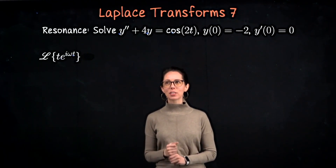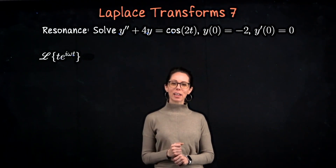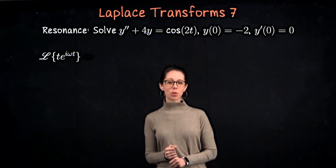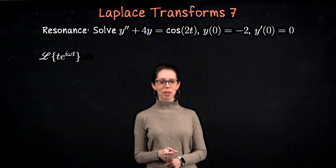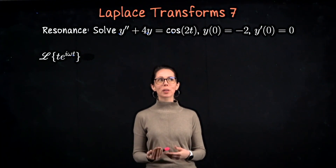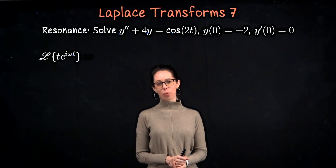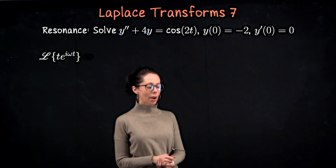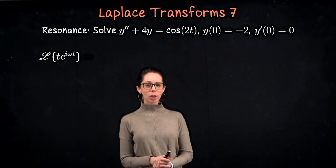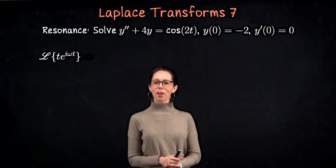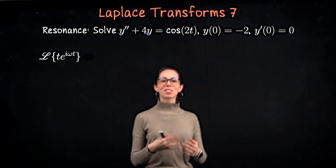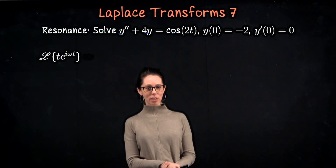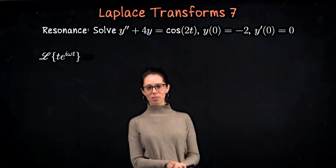If you take the left-hand side y double prime plus four y and write down its associated characteristic or auxiliary equation r squared plus four, and solve for r values that make it zero, you would get that r is plus or minus 2i. So your homogeneous solution is a linear combination of cosine of two t and sine of two t.